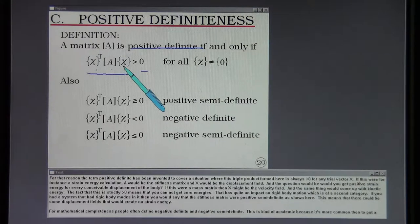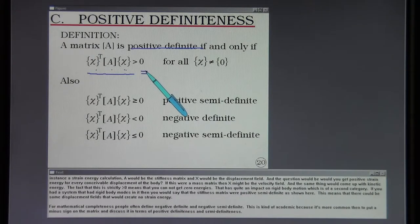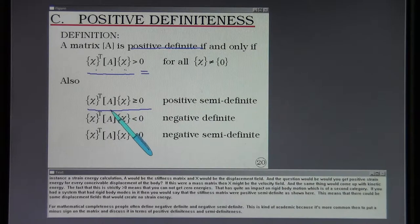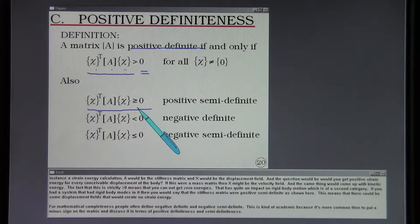If this were a mass matrix, then x might be the velocity field and the same thing would come up with kinetic energy. The fact that this is strictly greater than zero means that you cannot get zero energies. That has quite an impact on rigid body motion, which is of a second category. If you had a system that had rigid body modes in it, then you would say that the stiffness matrix were positive semi-definite as shown here. This means that there could be some displacement fields that would create no strain energy.